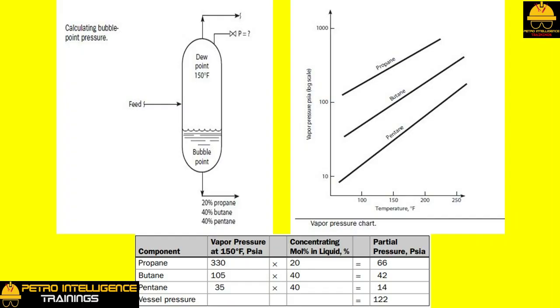Using the bubble point equation: are we missing the pressure PT in the flash drum shown in picture? Let's calculate this pressure using the bubble point equation and the vapor pressure chart shown in picture. The term partial pressure, meaning part of the total pressure created by each component, is important. The partial pressure of a component divided by the total pressure is the concentration of the component in the vapor phase.